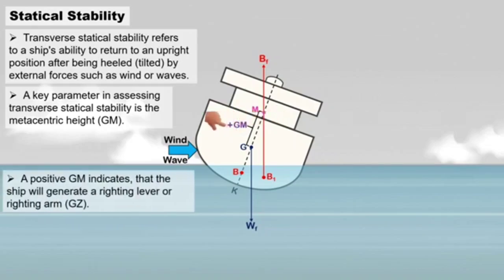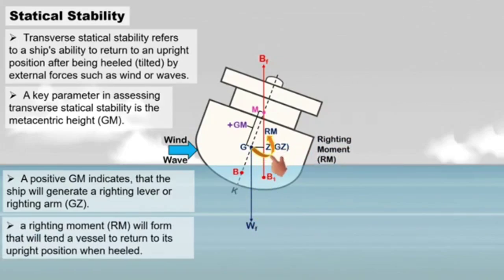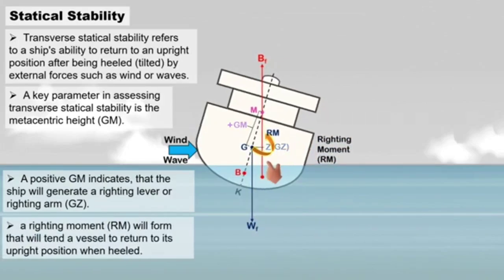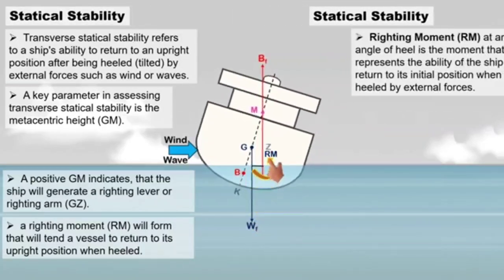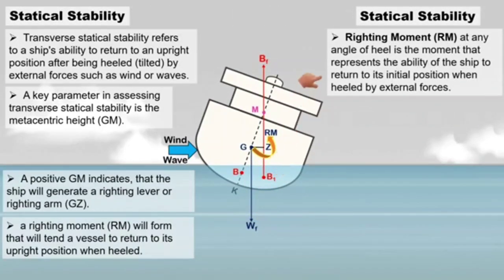A positive GM indicates that the ship will generate a righting lever or righting arm, GZ, so a righting moment will form that will tend the vessel to return to its upright position when heeled. The righting moment at any angle of heel is the moment that represents the ability of the ship to return to its initial position when heeled by external forces.